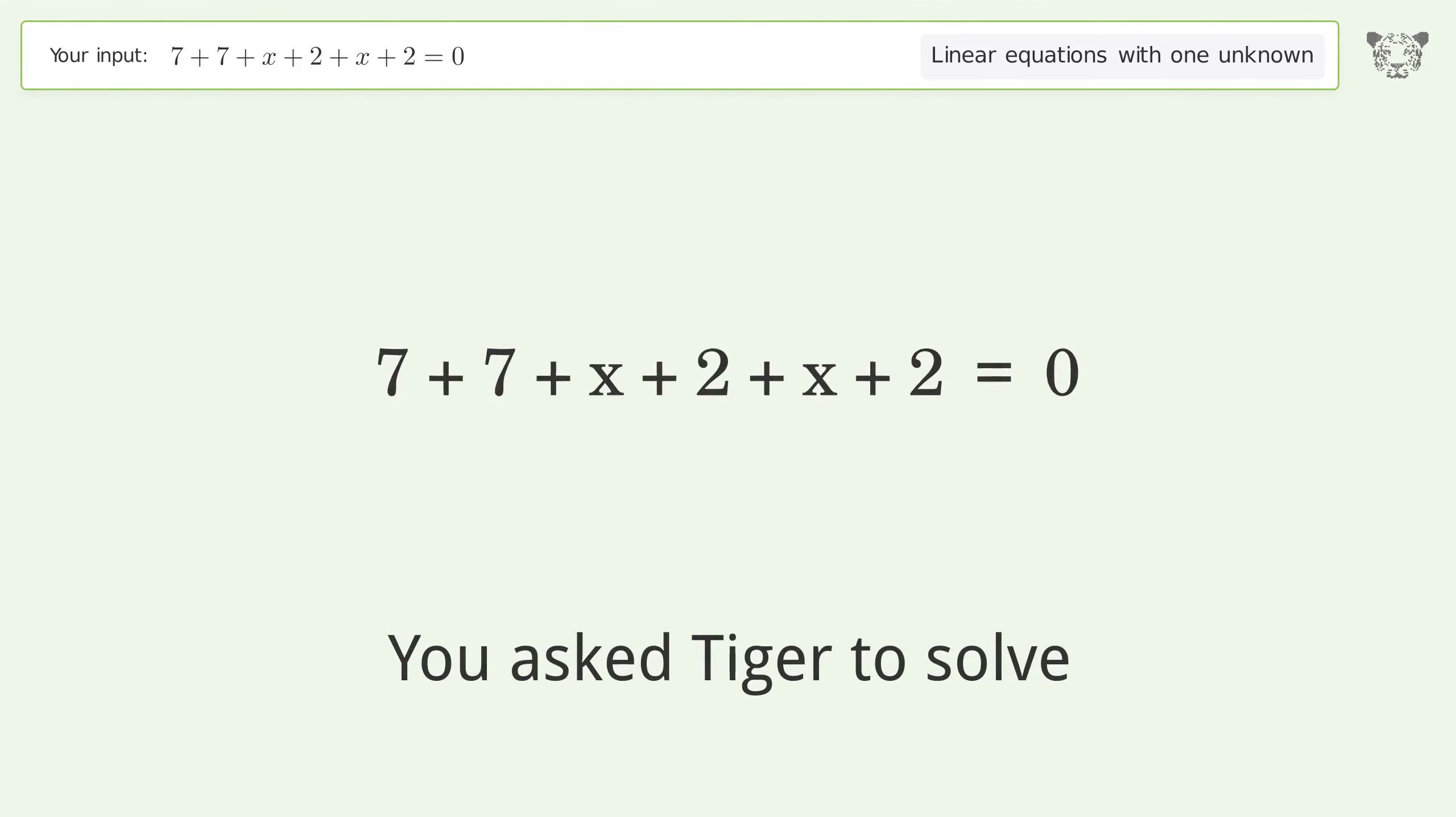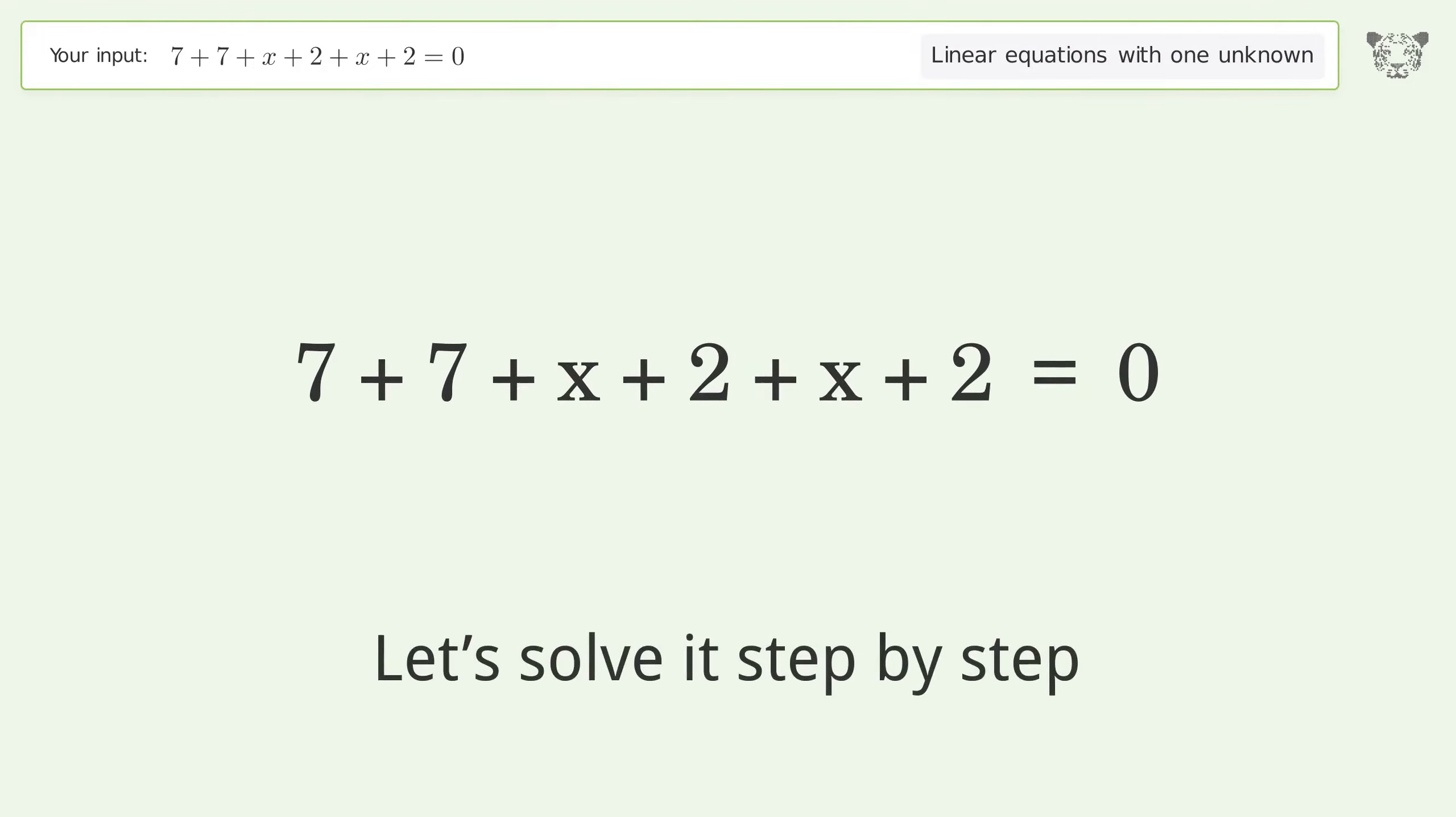You ask Tiger to solve this. It deals with linear equations with one unknown. The final result is x equals negative 9. Let's solve it step by step. Simplify the expression. Group like terms.